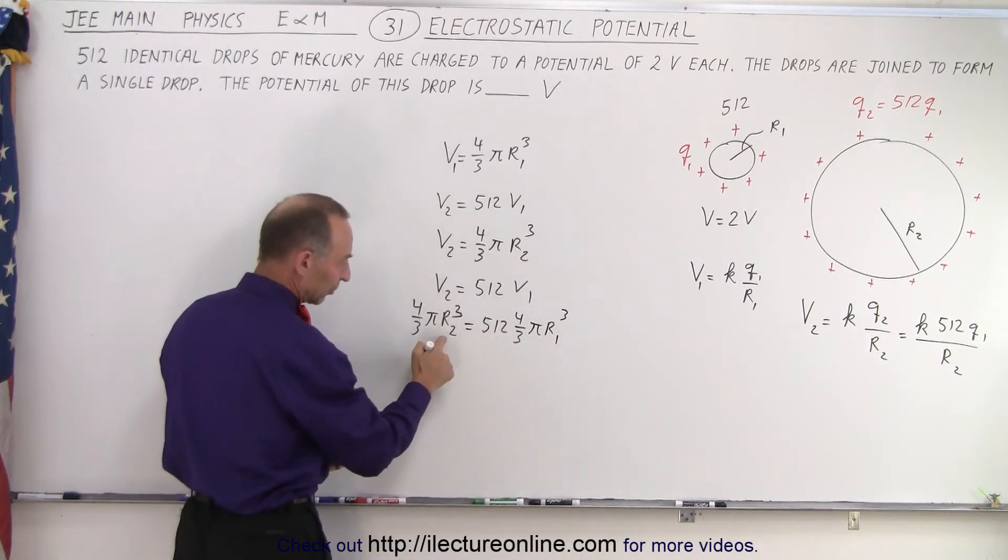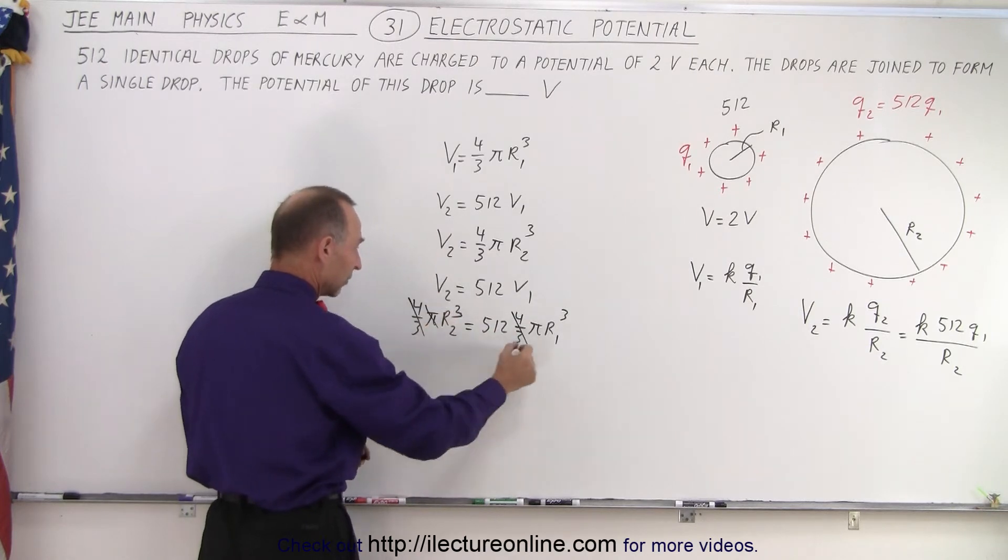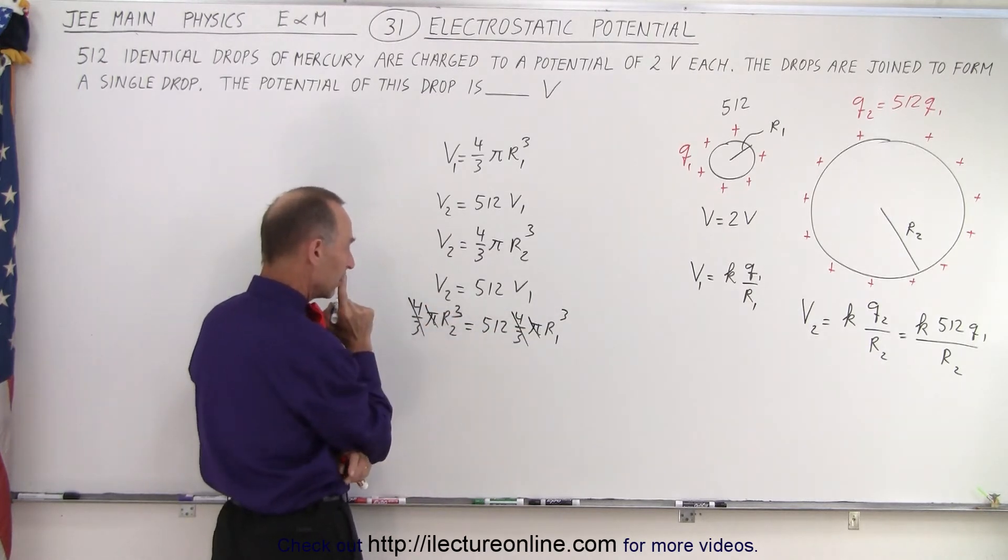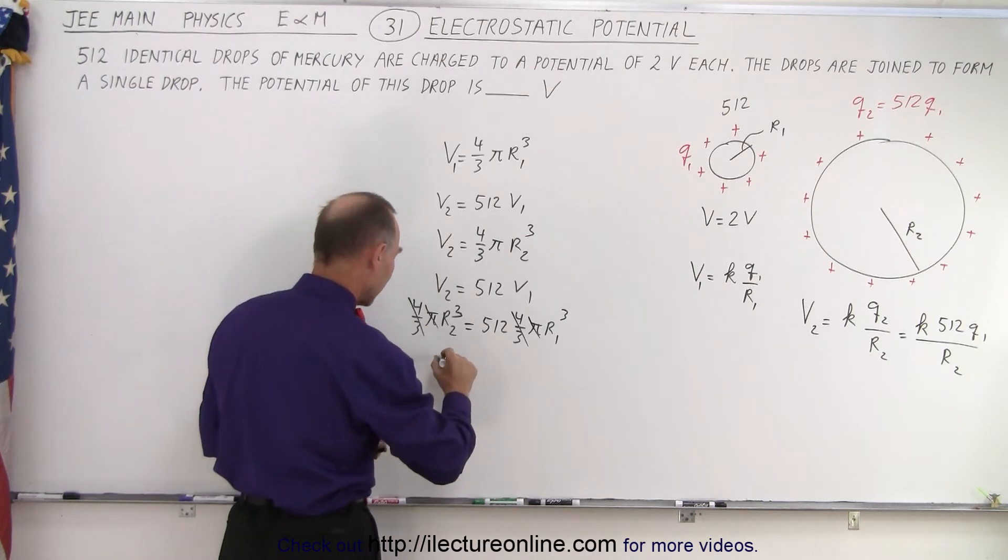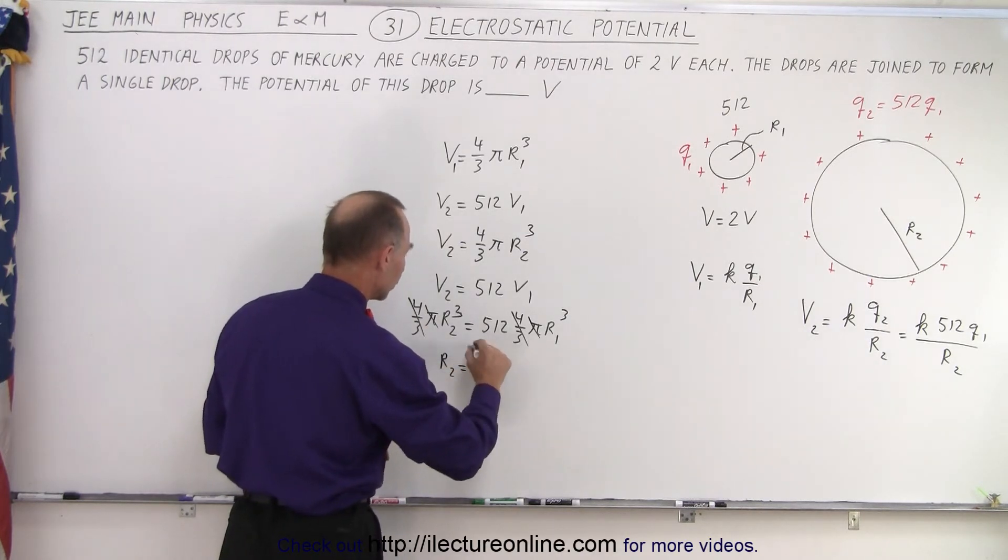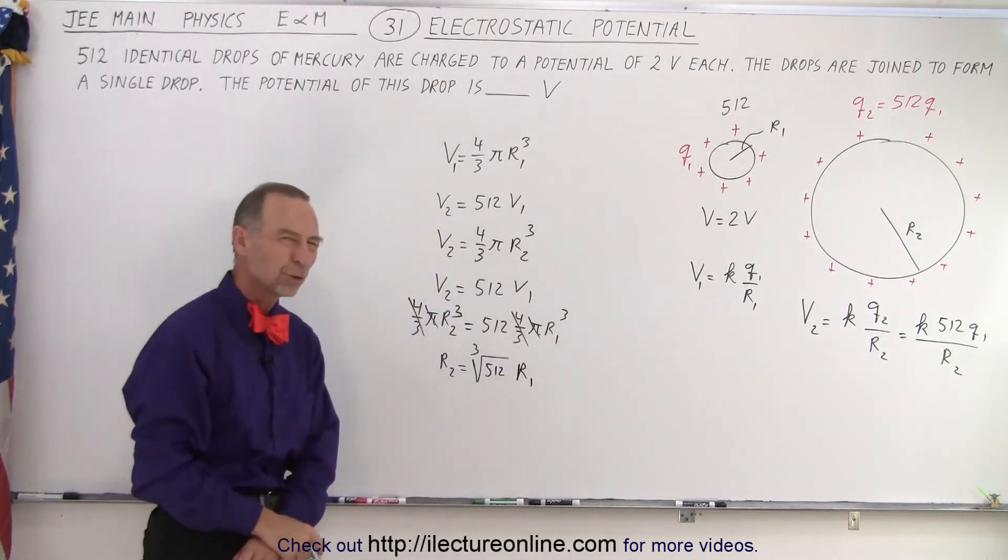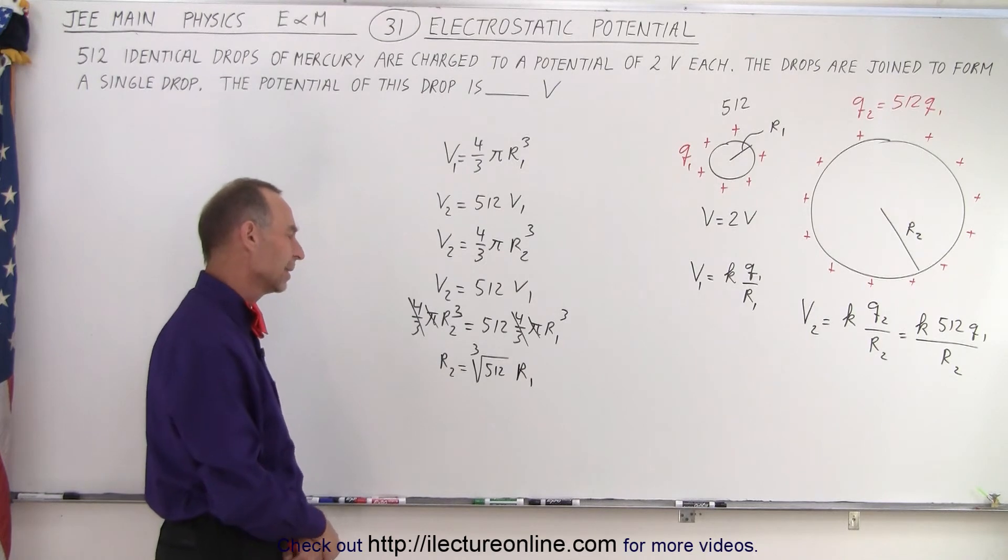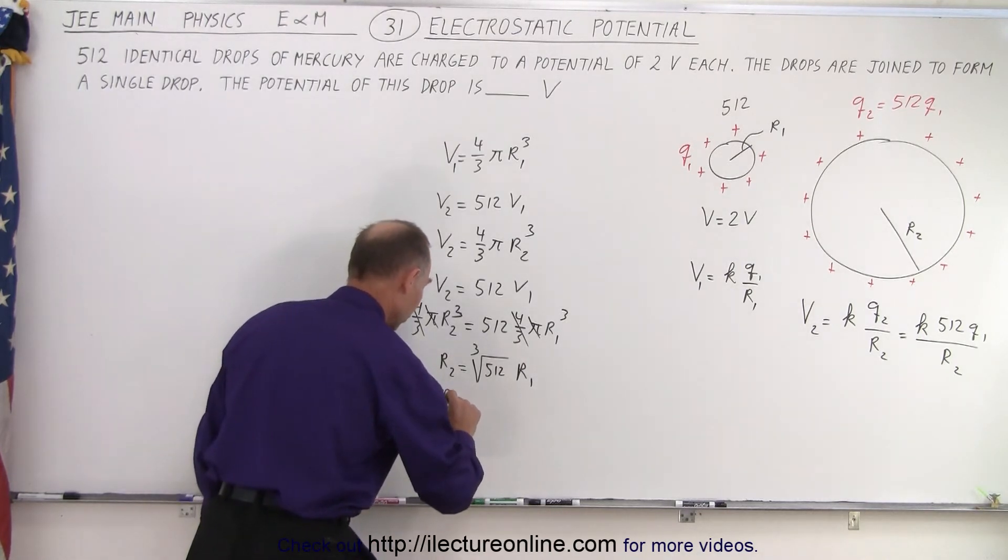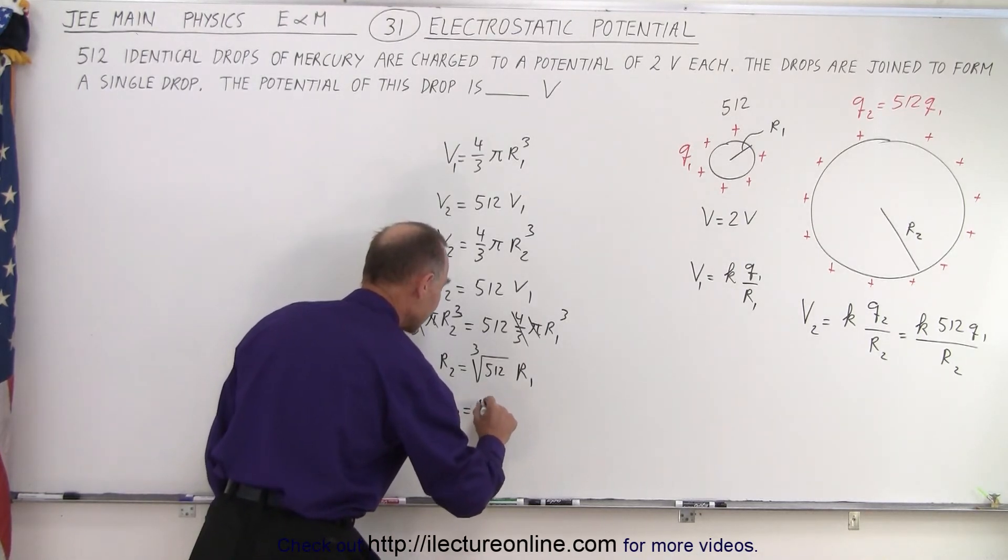And now, of course, this allows us to find the radius of the large sphere. 4 thirds cancels out, pi cancels out. We could then say that R2 is equal to the cube root of 512 times R1. Now, what is the cube root of 512? Let's see. 8 times 8 is 64 times 8. I think that might be it. Yes, that is it. So we have R2 is equal to 8 times R1.